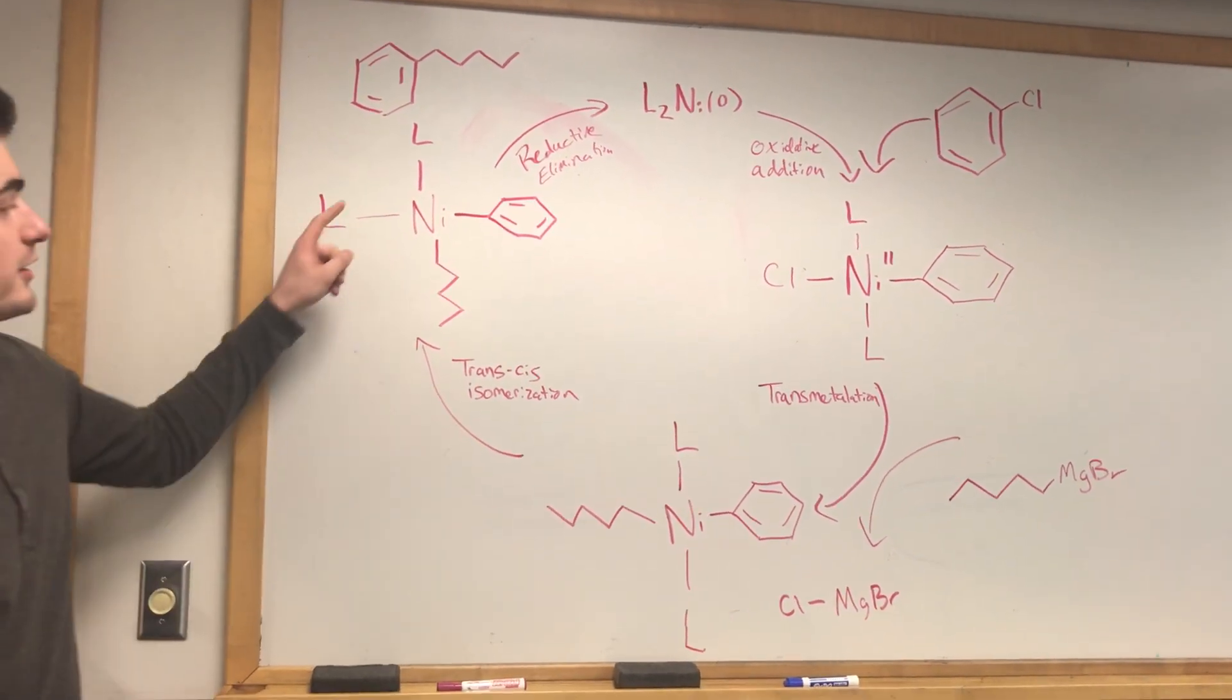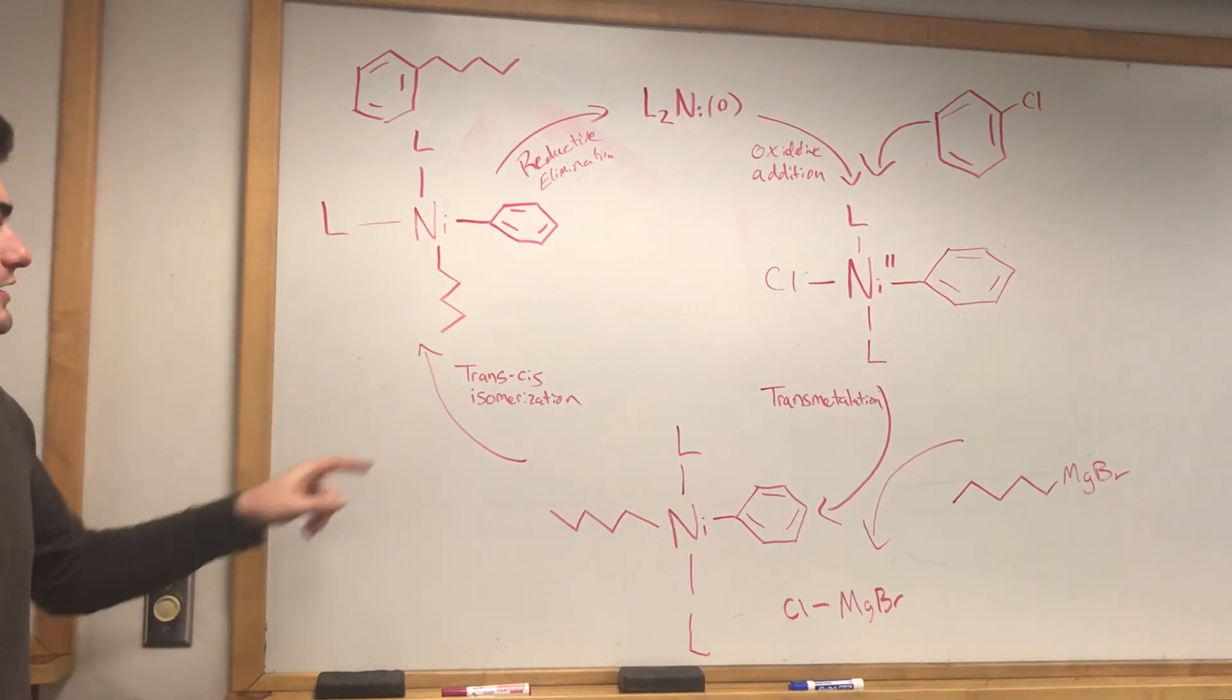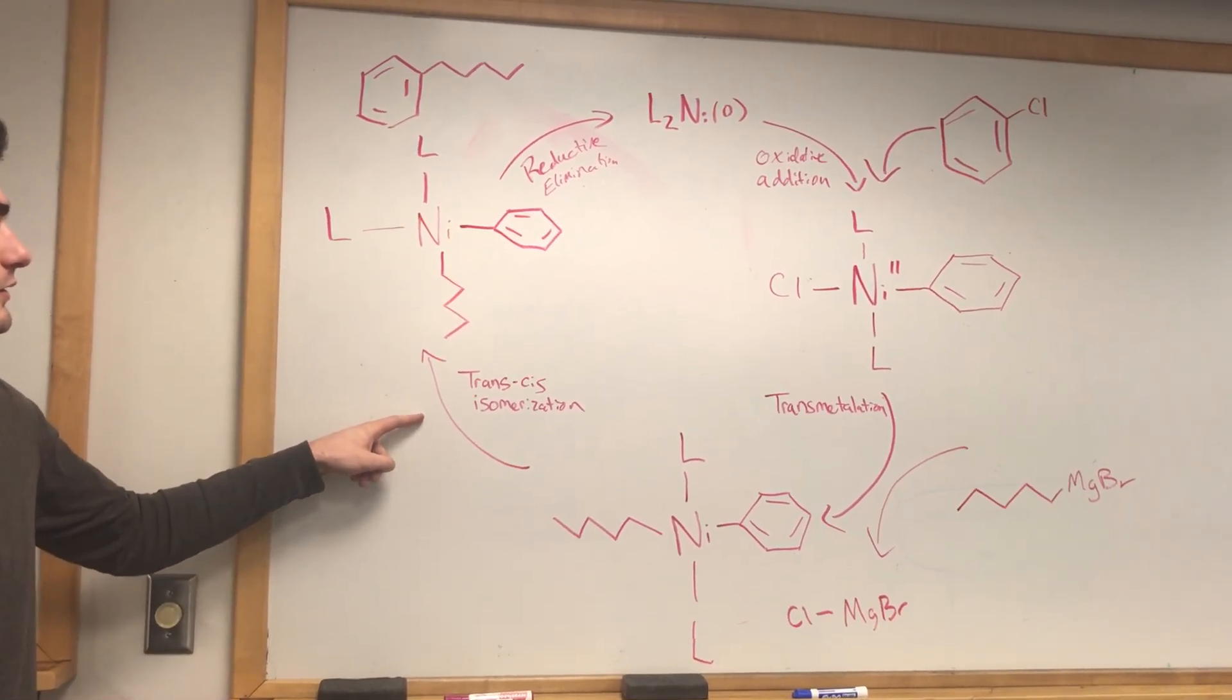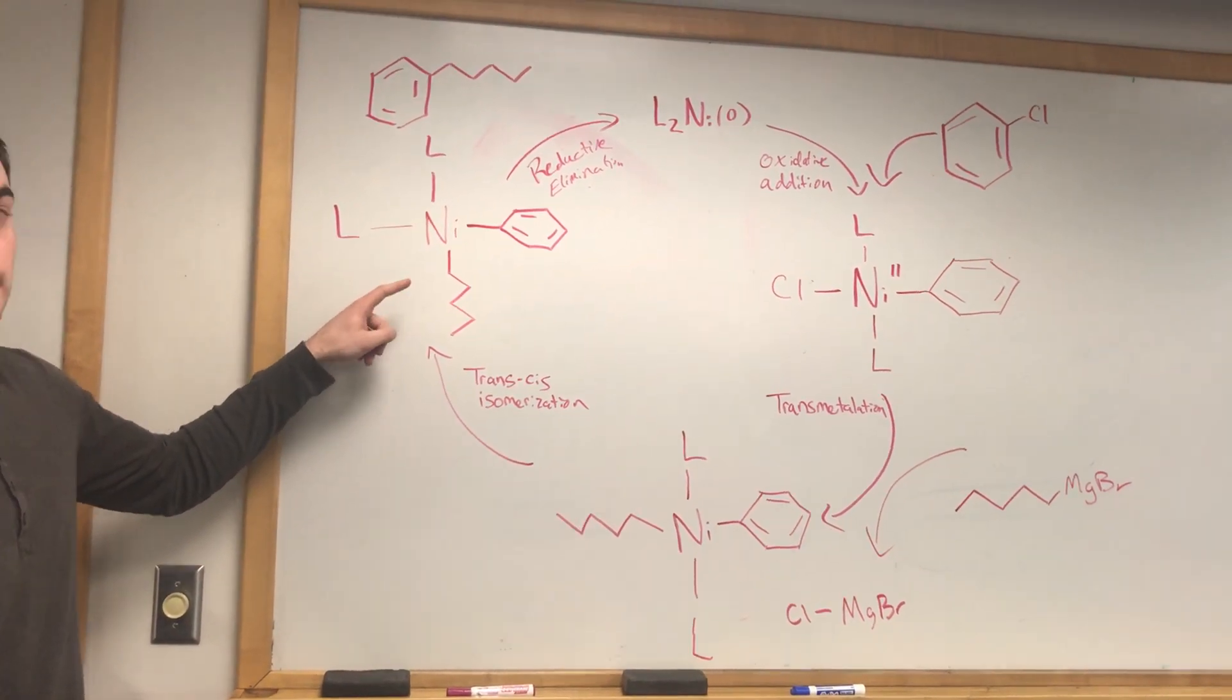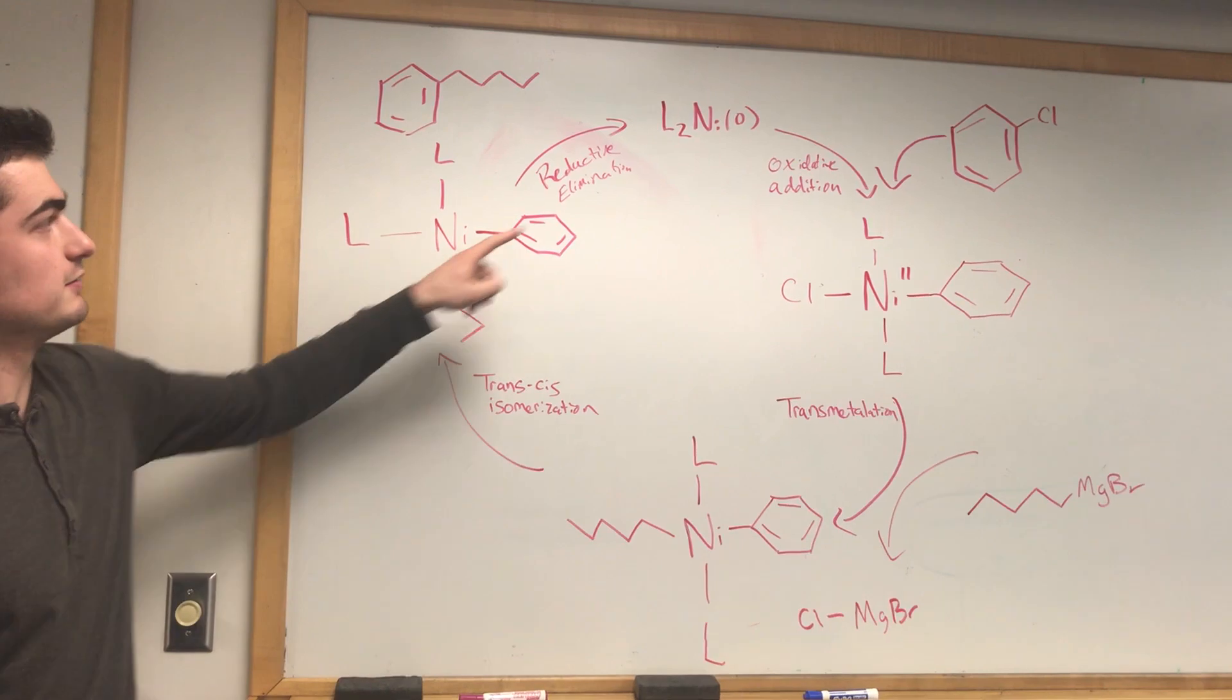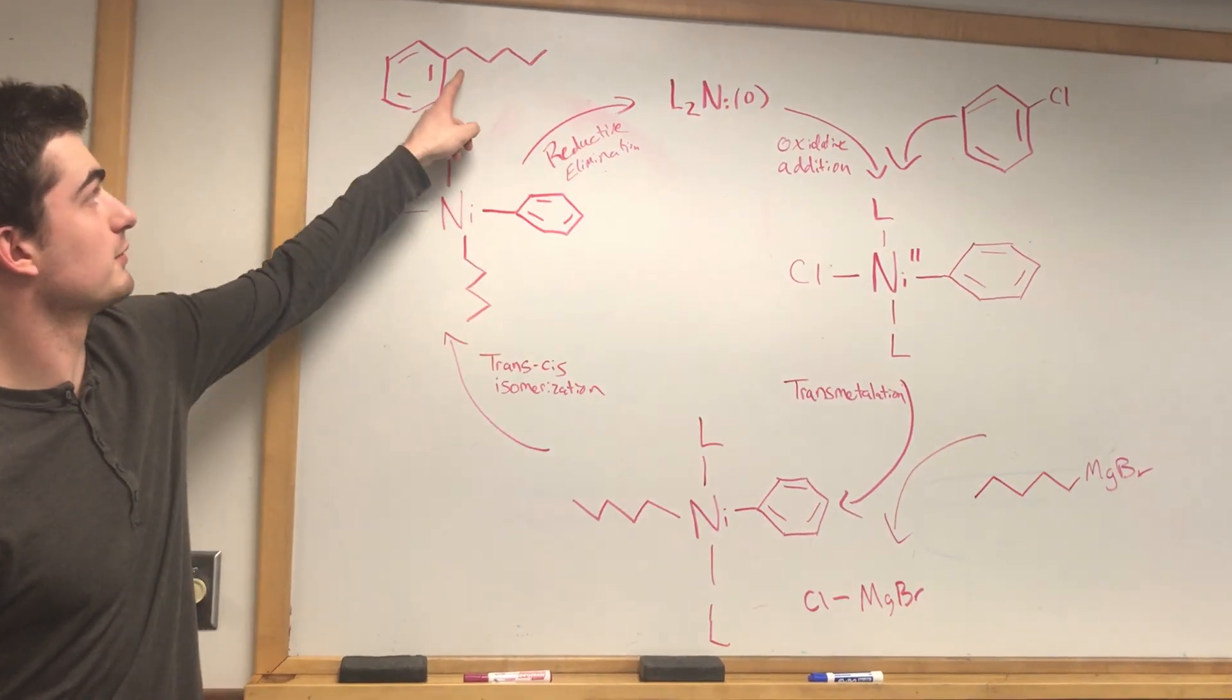And then in order to eventually form our carbon-carbon bond, we're going to need a trans-cis isomerization to get the molecule in the proper orientation. So that's going to allow for this molecule to be formed. And then the last step is a reductive elimination to regenerate our catalyst and form our carbon-carbon bond.